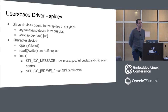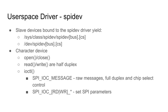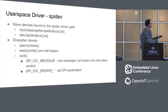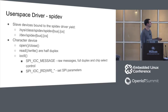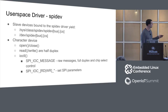Once the driver binds, the magic that happens is that sysfs class spidev devices get created. The bus is your master's numerical ID as allocated in the system, and there's a device for each chip select. So if you had three chip selects you'd have bus 0.0, 0.1, 0.2. You also get /dev/spidev with the same notation. It's a simple character device: open, close, read, write — though read and write are half-duplex.